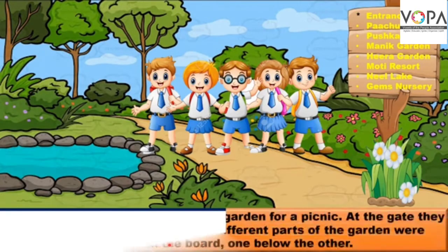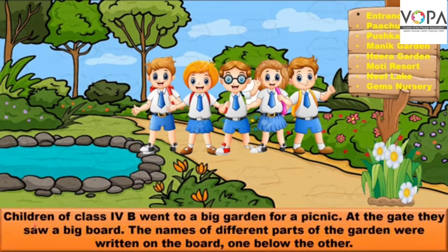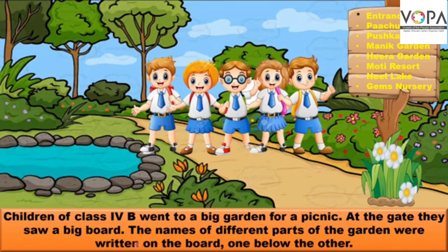A Visit to a Garden: Children of class 4B went to a big garden for a picnic. At the gate they saw a big board. The names of different parts of the garden were written on the board, one below the other.